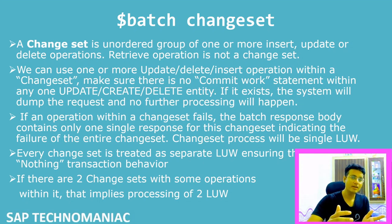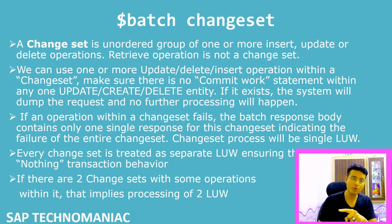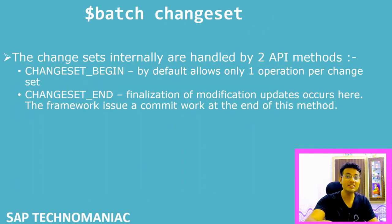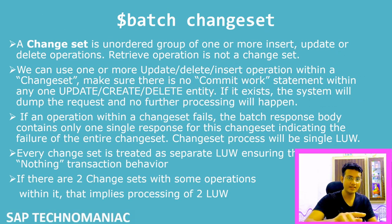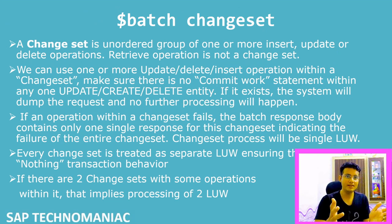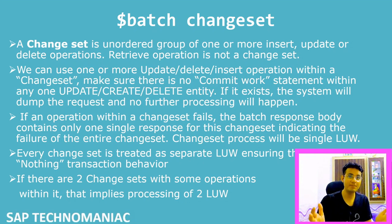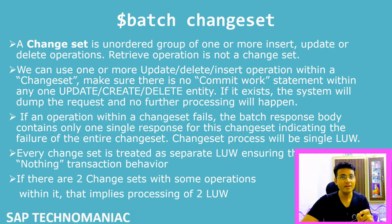To activate multiple change operations within a change set, you have to enable the Change Set Begin and Change Set End methods. You must implement those methods — only then can you do multiple operations within the change set. And as soon as you implement those methods and have multiple operations, you must not write COMMIT WORK anywhere in those entity methods — that is very important.